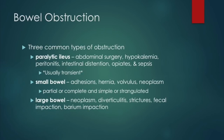Moving on to bowel obstruction, there are three common types: paralytic ileus, small bowel obstruction, and large bowel obstruction. Paralytic ileus is common from abdominal surgery, hypokalemia, peritonitis, intestinal distension, opioid use, and sepsis. Typically, paralytic ileus is transient and less severe than small bowel obstruction.